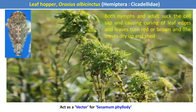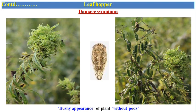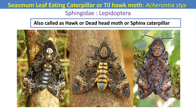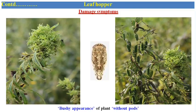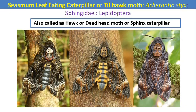The next pest is leafhopper. It is a sucking pest. Egg laying takes place under the surface of the leaves. Both nymphs and adults are the damaging stages. They suck cell sap from different tender plant parts, causing curling of the leaf edges. Leaves turn red or brown, dry up, and shedding of leaves occurs. During feeding, the leafhopper injects toxic saliva into the host tissue and also acts as a vector for sesame phyllody, a viral disease. In severe infestation, the plant shows a completely bushy appearance without pod formation. For control, spray with systemic insecticides like thiamethoxam, acephate, or imidacloprid.